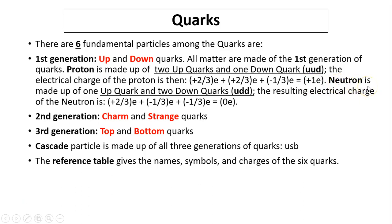Neutron is up, down, down. Made of one up quark and two down quarks. The resulting charge on a neutron is up is two-thirds, down is negative one-third, and another negative one-third. So the charge on the neutron is zero. It's neutral. The second generation of quarks is charm and strange, and the third is top and bottom. There is a special variant called cascade. Cascade actually is made up of all three generations: one from the first generation, one from the second generation, one from the third generation. It's up, strange, and bottom. You can find all this information from your reference table.